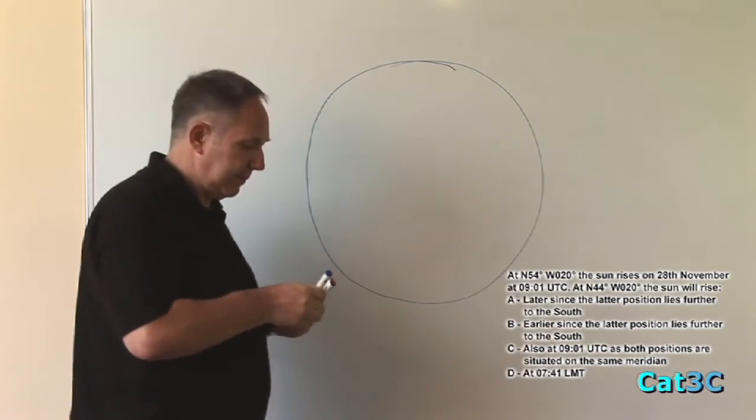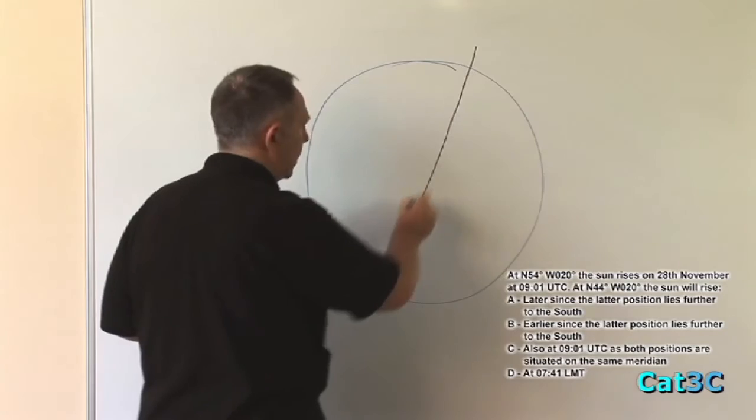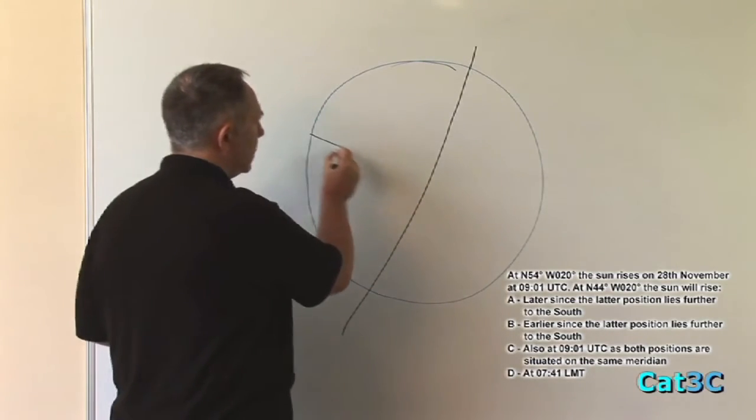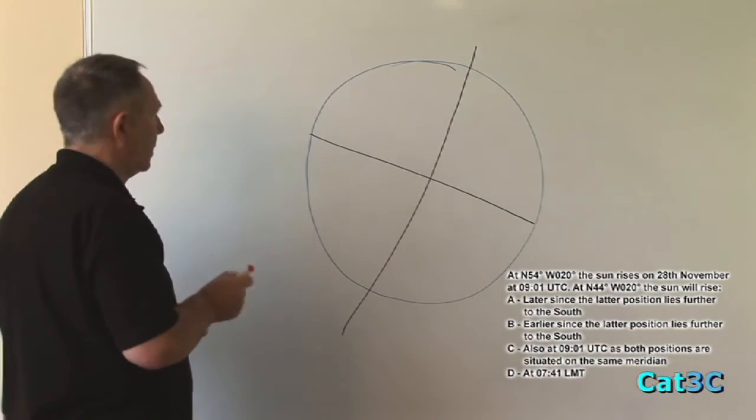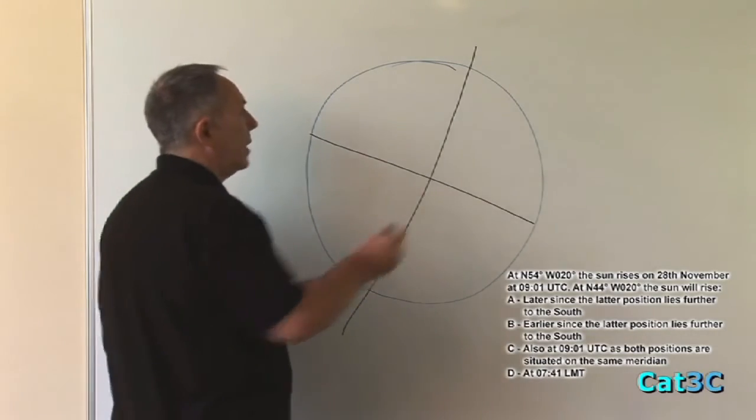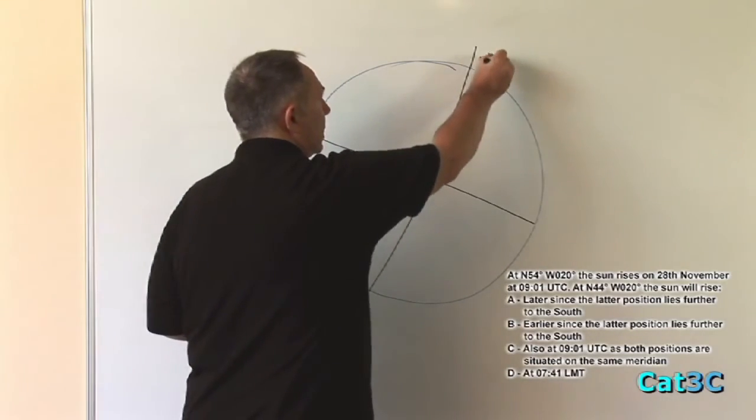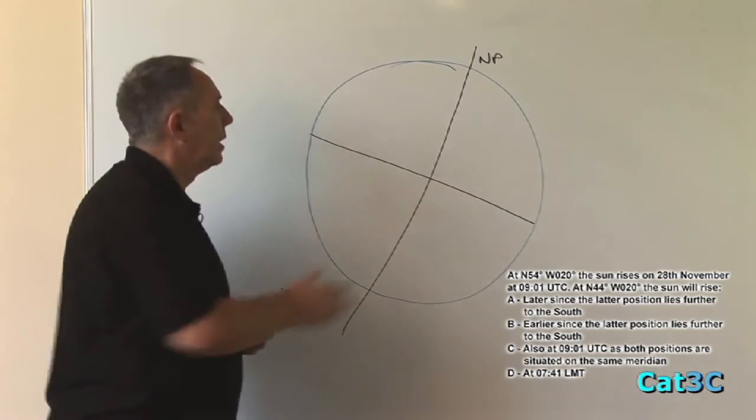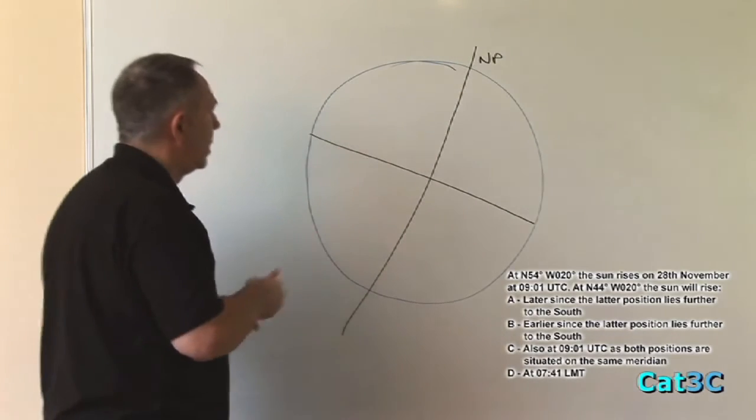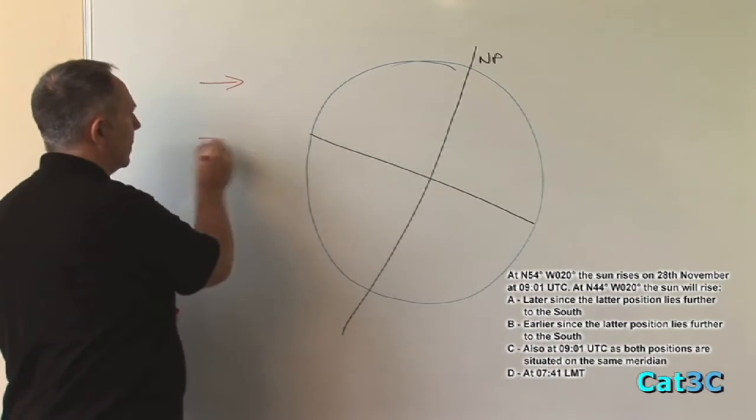Remembering that the earth is tilted at an angle of approximately 23.5 degrees to the ecliptic, which is the path of the earth around the sun. In the winter months, 28th of November being the northern hemisphere winter, the north pole is tilted away from the sun, which will place the sun on this side of the earth.